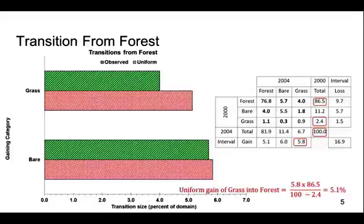Results show that the observed bars are less than the uniform bars for both bare and grass. This means that both bare and grass gain less intensively from forest than they did across the entire study area. In other words, when bare and grass gain, they both avoid forest.